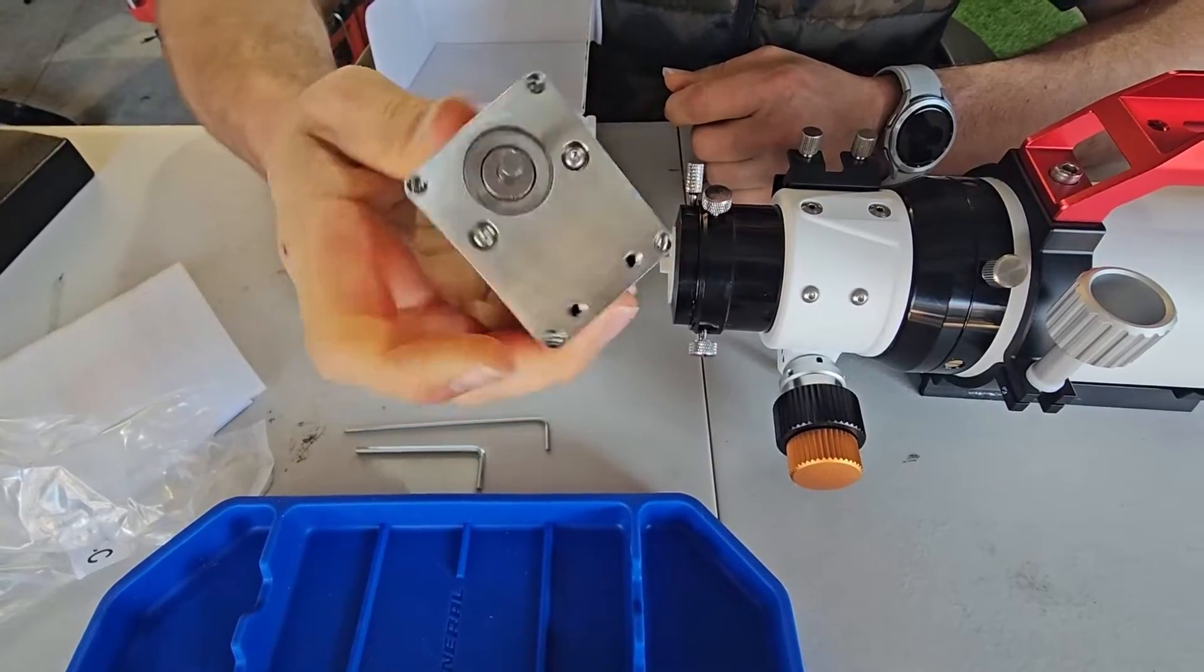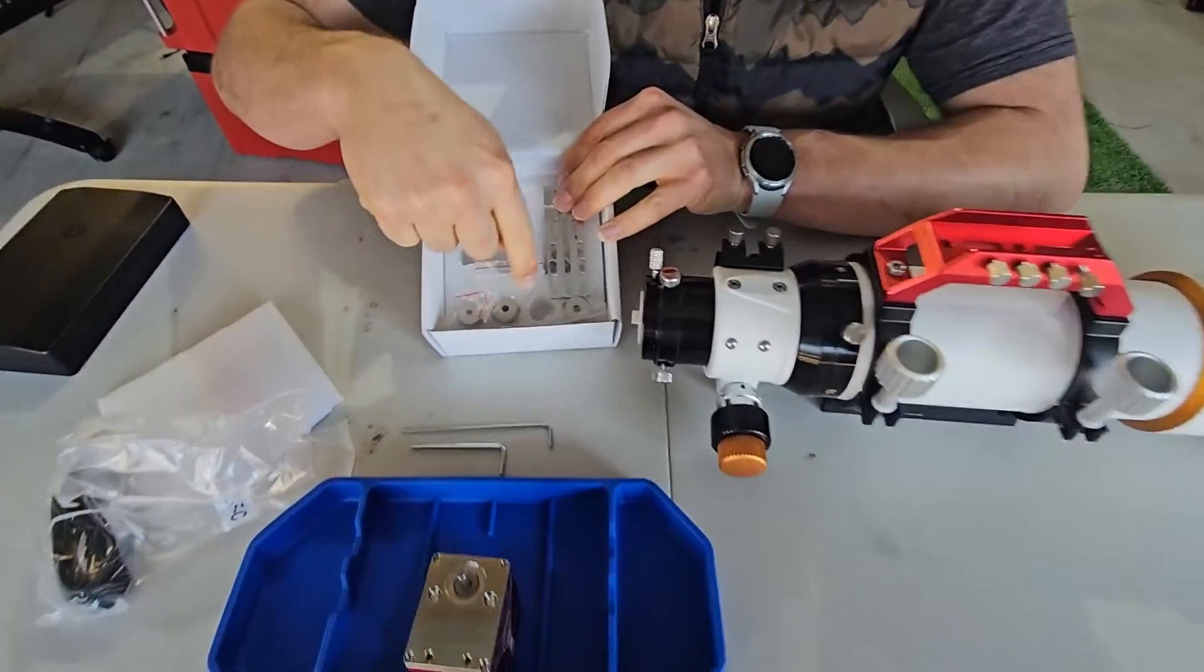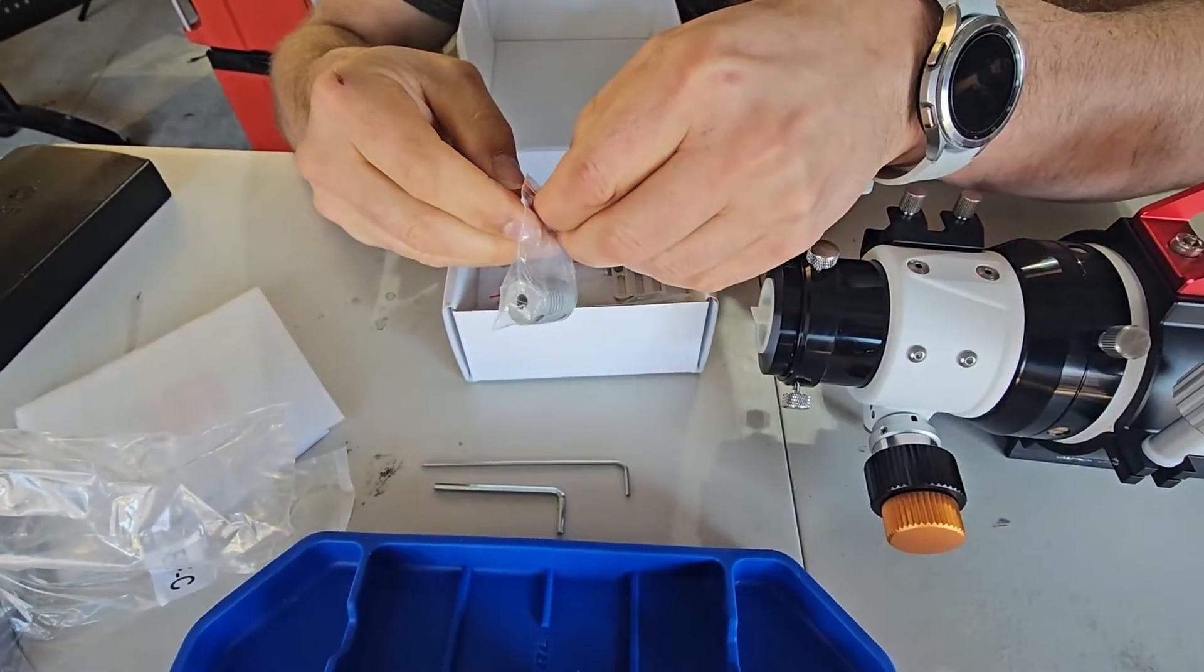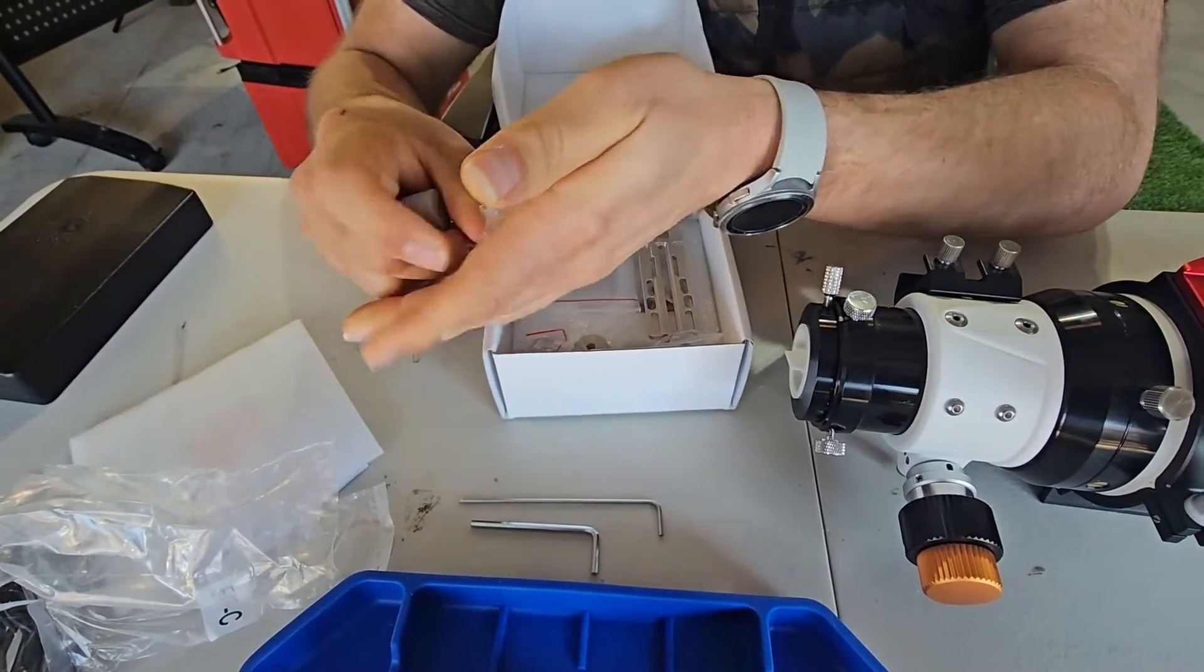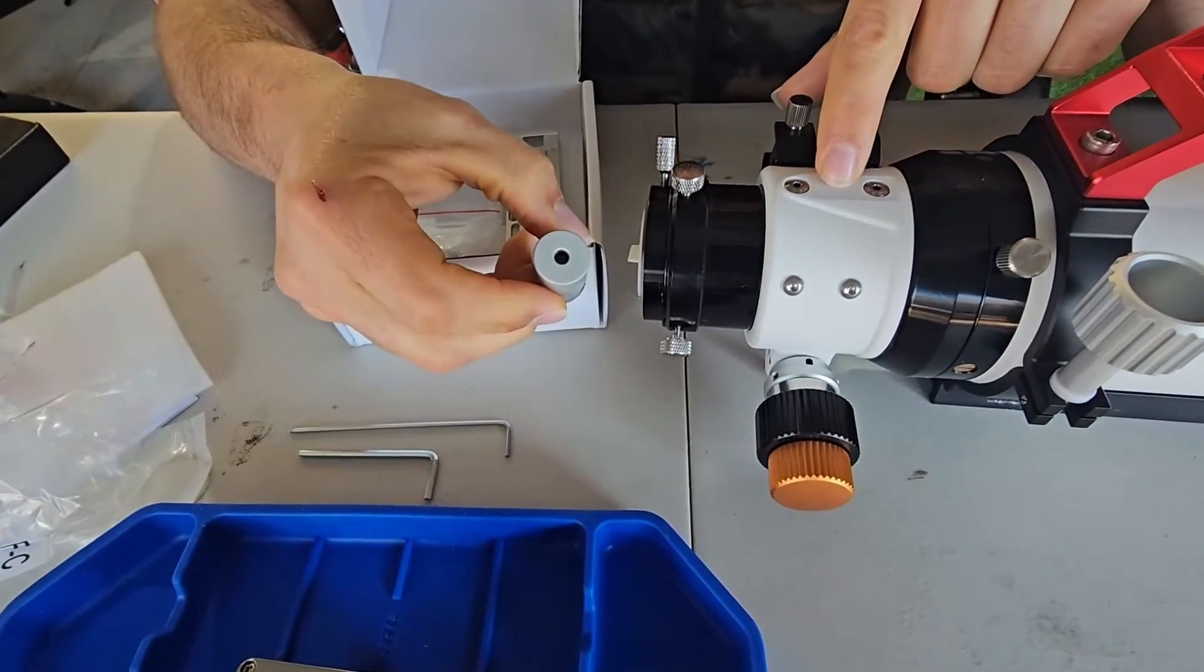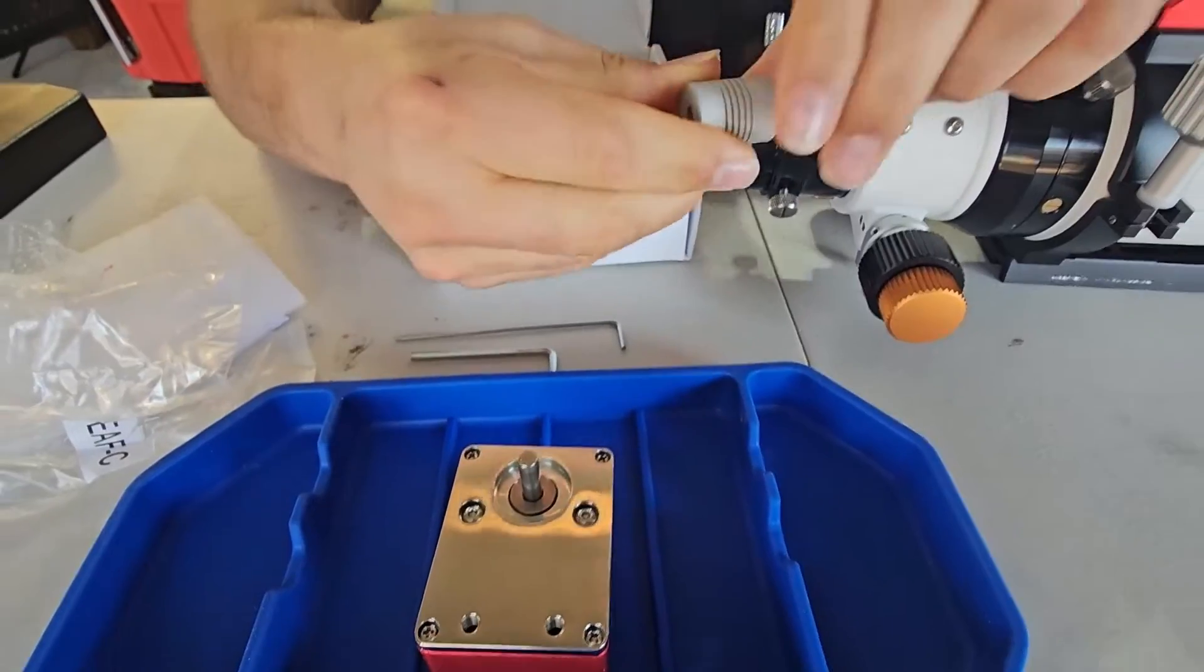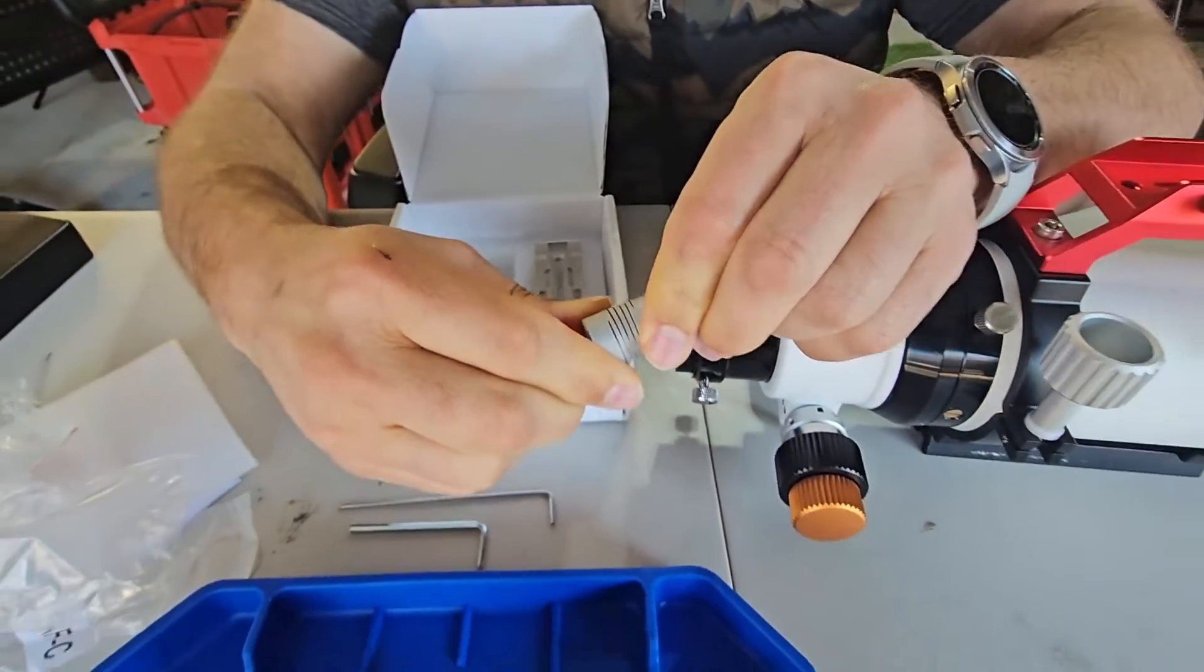ZWO EAF, that's what it looks like. We have a series of collars that will mount onto the actual focuser shaft. They all have different sizes for different size shafts on the focuser. One side will go on the actual motor and the other one will go on the shaft of the focuser, and then it has a little bit of a spring to it and that's just to account for any variations between the two.